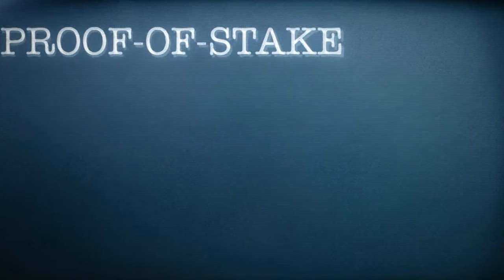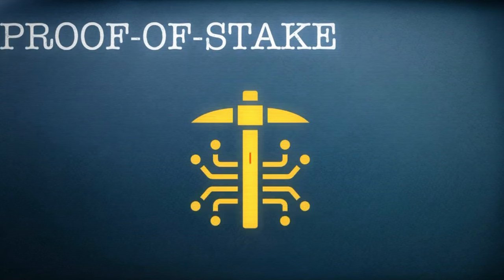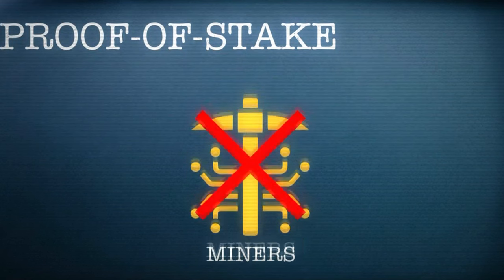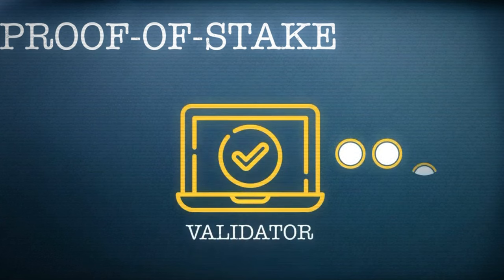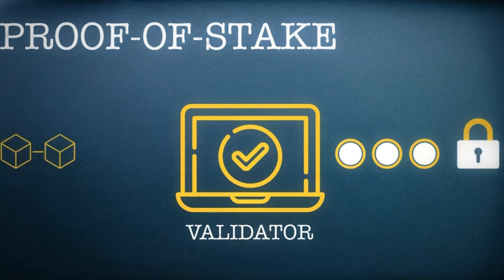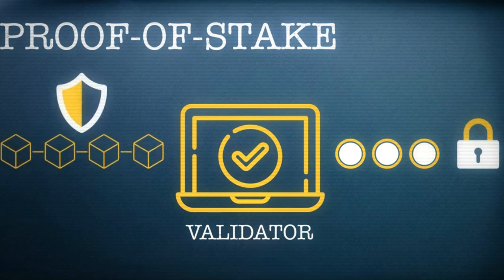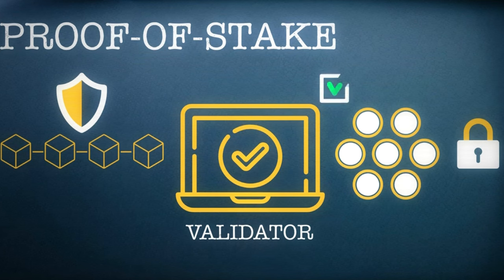Another alternative is proof of stake. This type of blockchain eliminates the need for miners altogether. That's because they are replaced by validators, people who lock up their coins in order to play a role in keeping the network secure. Those who stake the most coins have a greater chance of being selected to add a new block to the blockchain.